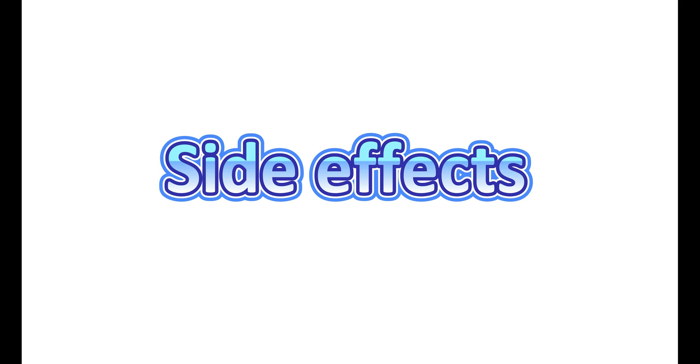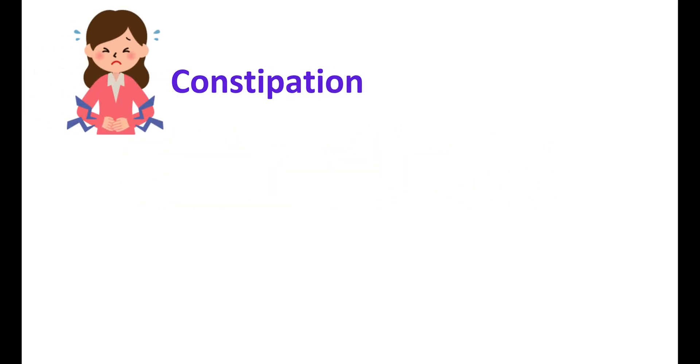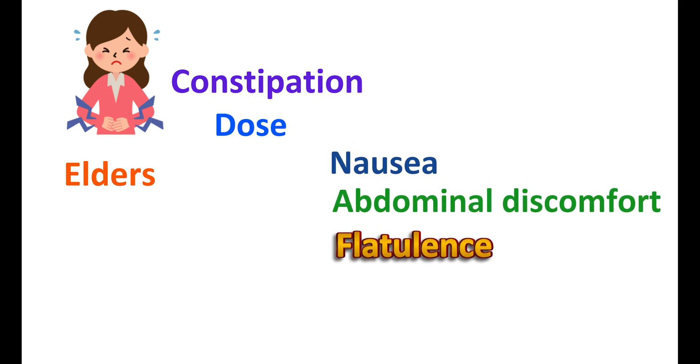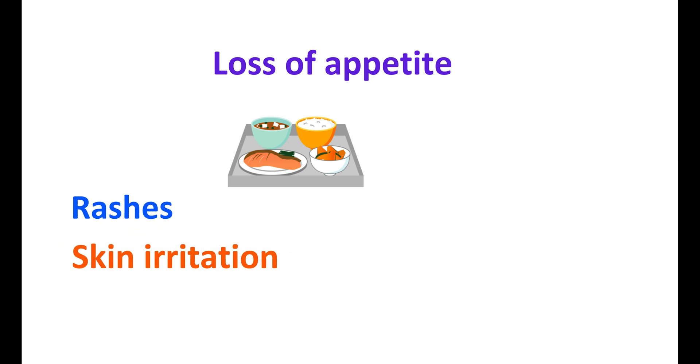The important side effects of cholestyramine include constipation, which is dose-related and more pronounced at higher doses and in elderly patients. Other side effects include nausea, abdominal discomfort, flatulence, and belching. Loss of appetite is another important effect, since cholestyramine occupies a bulk volume in the GI tract. Rashes and skin irritation are also observed with cholestyramine.